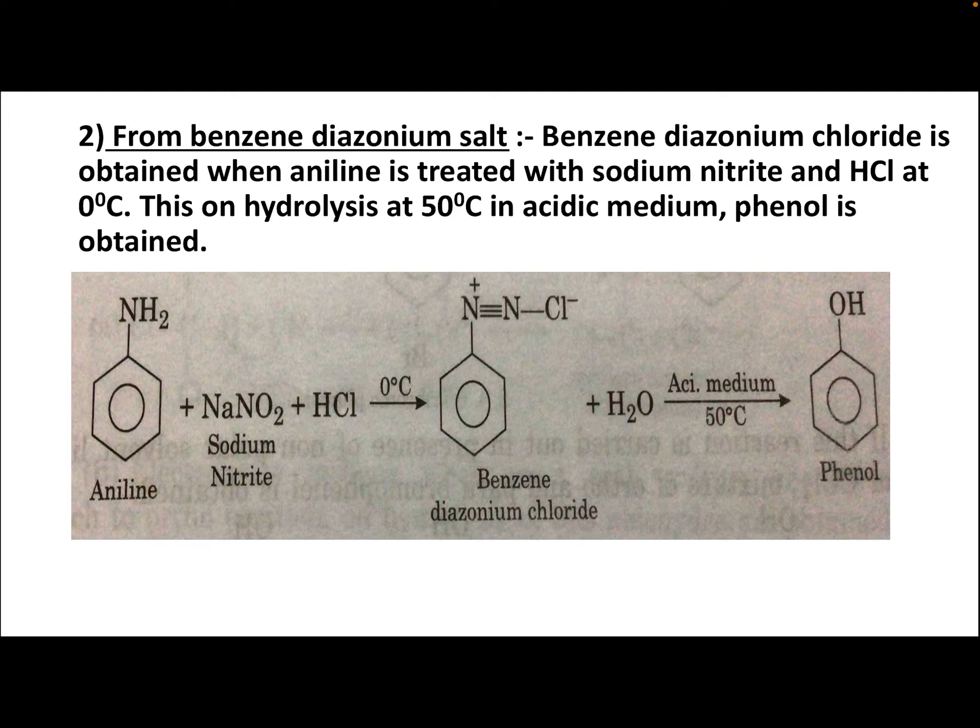The second method is from benzene diazonium salt. Benzene diazonium chloride is obtained when aniline is treated with sodium nitrate (NaNO2) and HCl at 0°C. On benzene, the diazonium group (N≡N⁺) with chloride is formed. This benzene diazonium chloride on hydrolysis at 50°C in acidic medium gives phenol. This is the second method of preparation of phenol.